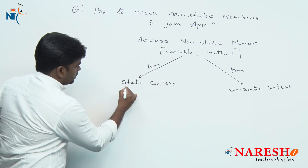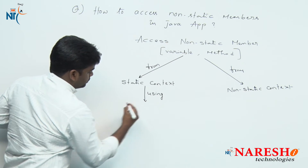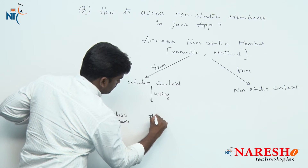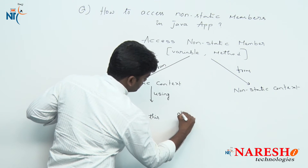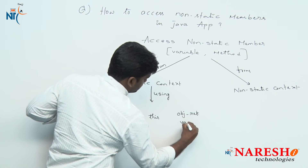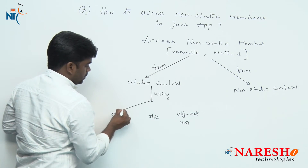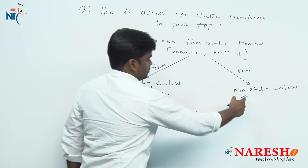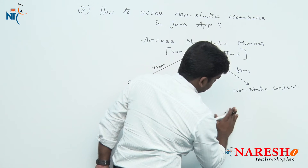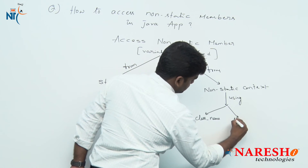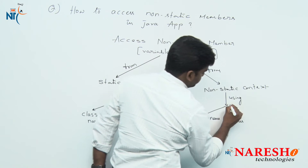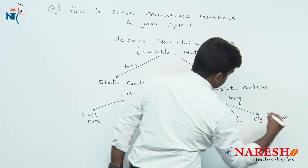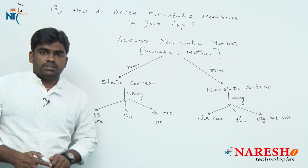From the static context, the options are: first, class name; second, 'this' keyword; third, object reference variable. From the non-static context as well, we have: class name, 'this' keyword, and object reference variable.